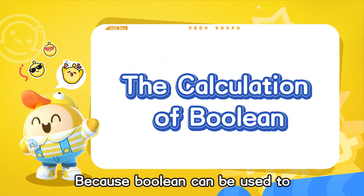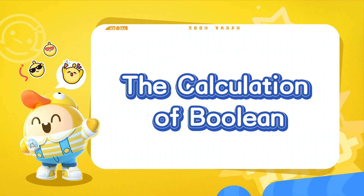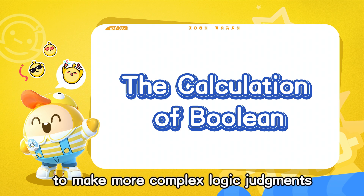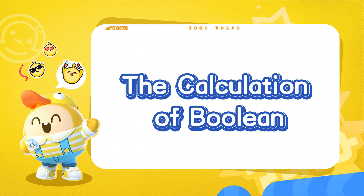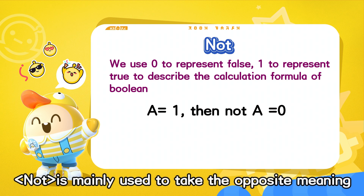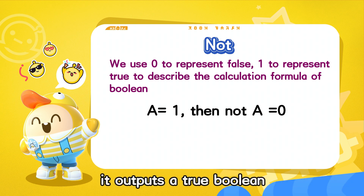Because Boolean can be used to express the truth of things, we can also use the calculation of Boolean to make more complex logic judgments. Not is mainly used to take the opposite meaning: when a condition is not met, it outputs a true Boolean.